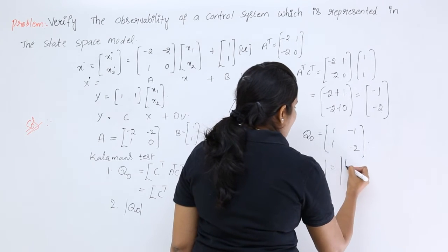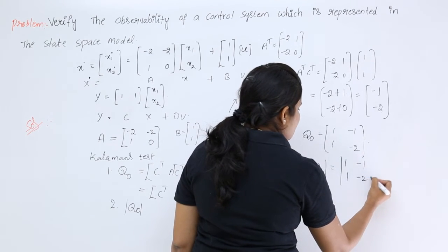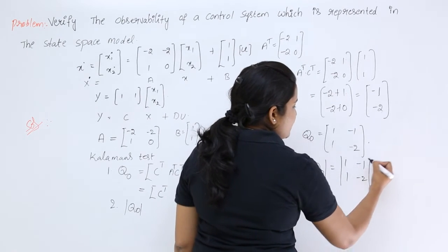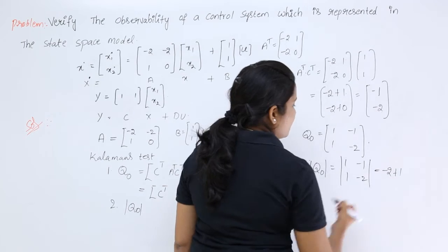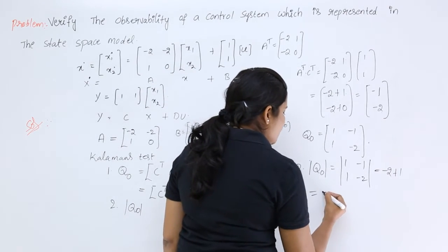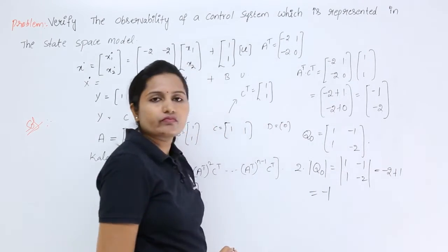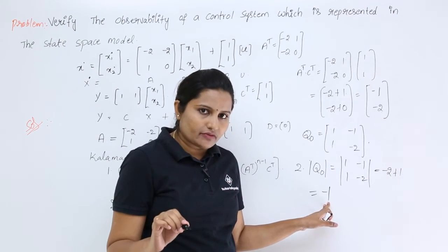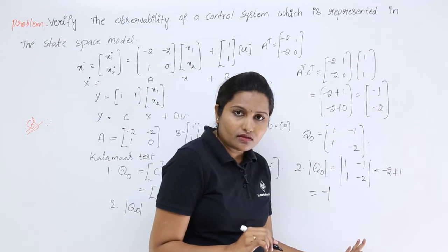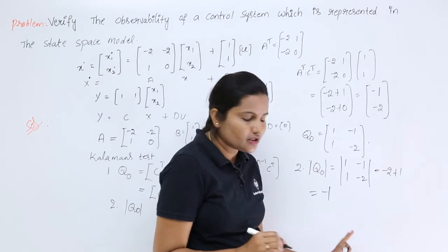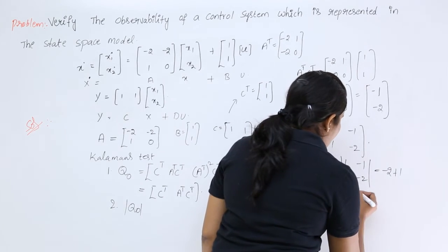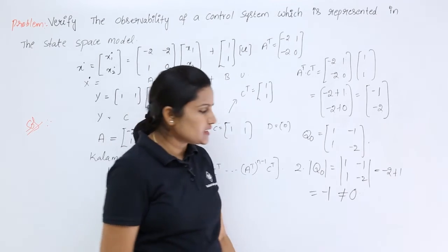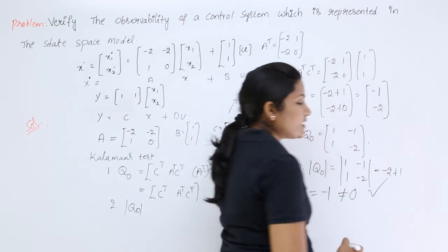The determinant of Q_O = [[1, minus 1], [1, minus 2]] is computed as AD − BC = (1×minus 2) − (minus 1×1) = minus 2 + 1 = minus 1. If the determinant were equal to 0, the system would not be observable. But here the determinant is minus 1, which is not equal to 0, so the system is observable.